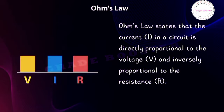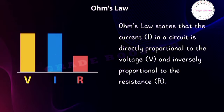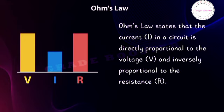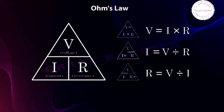In simple terms: if you increase the voltage, the current increases; if you increase the resistance, the current decreases. Mathematically, Ohm's law is written as V = IR, or I = V/R, where V is the voltage, I is the current, and R is the resistance. So if you know any two of these values, you can calculate the third one.